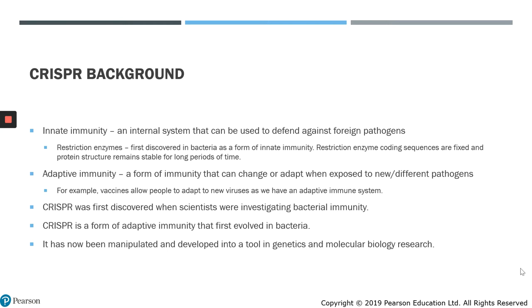So let's first talk about the background. When we talk about innate immunity, we talk about an internal system that can be used to defend against foreign pathogens. Restriction enzymes, which were first discovered in bacteria, are a form of innate immunity. The restriction enzyme coding sequences are fixed, and therefore the protein structure remains stable for long periods of time and does not change very rapidly.